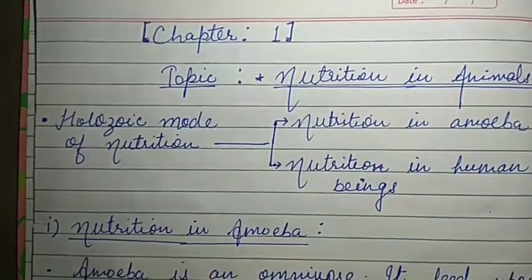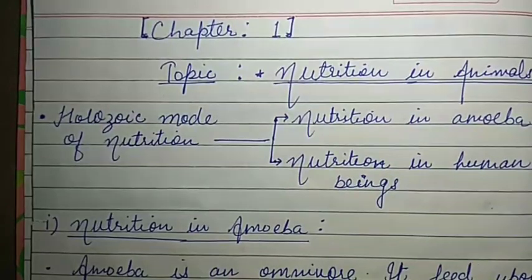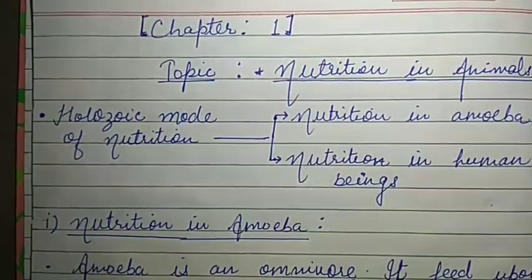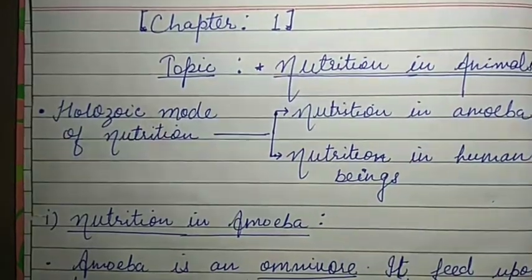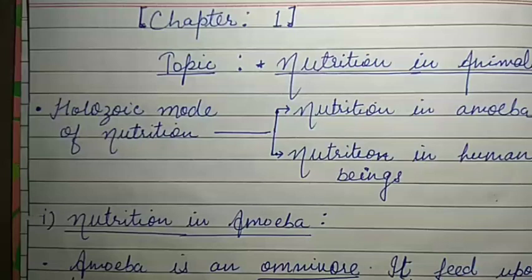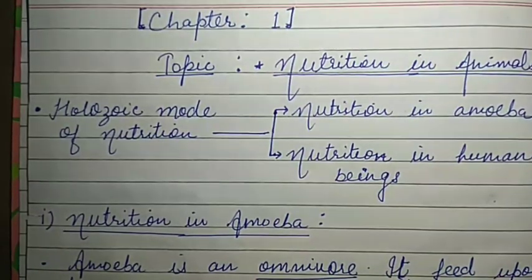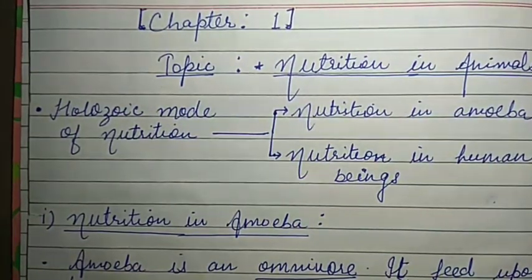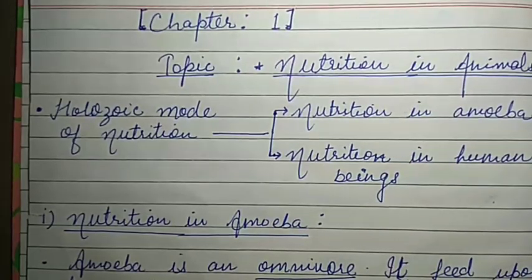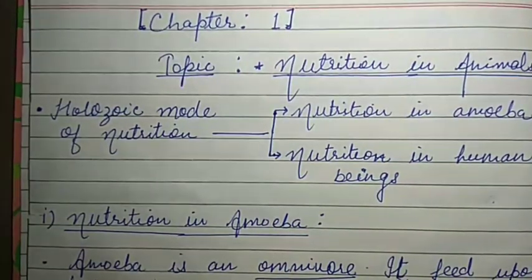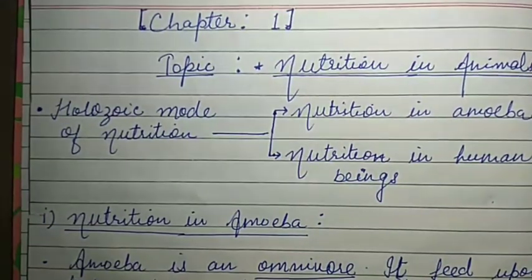Hello everybody. Today we are going to study the topic of nutrition in animals. We have to study especially holozoic mode of nutrition, and in holozoic mode of nutrition, we have to study two subtopics: nutrition in amoeba and nutrition in human beings. The mode of nutrition in which food is taken as whole and digestion is completed in four steps — ingestion, digestion, absorption, assimilation, and egestion — is called holozoic mode of nutrition.